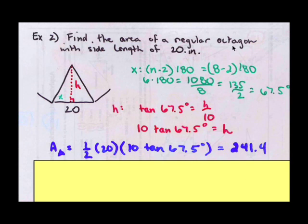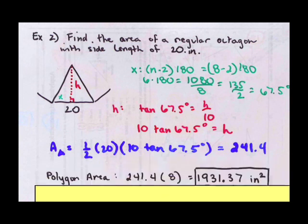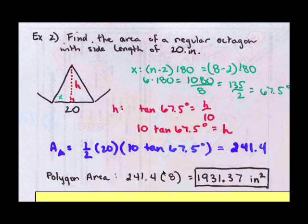I do have an octagon, so there are eight triangles within this shape. Taking that area with that answer still in the calculator and just hitting times eight, I get the final answer of 1931.37 inches squared.